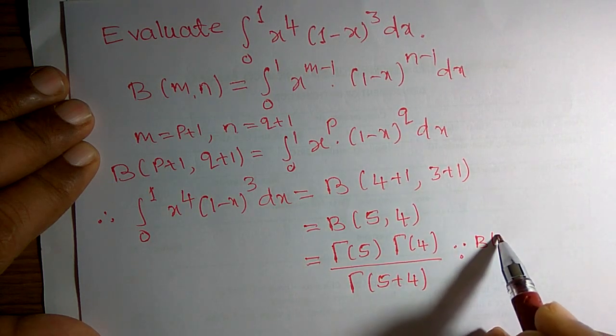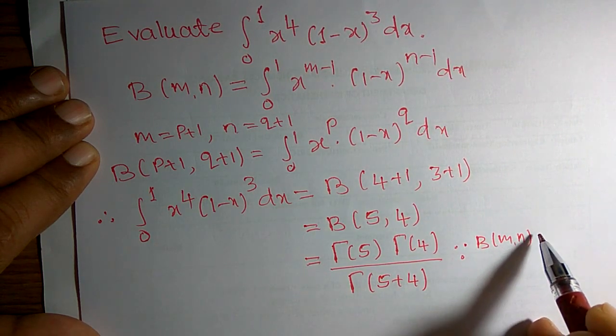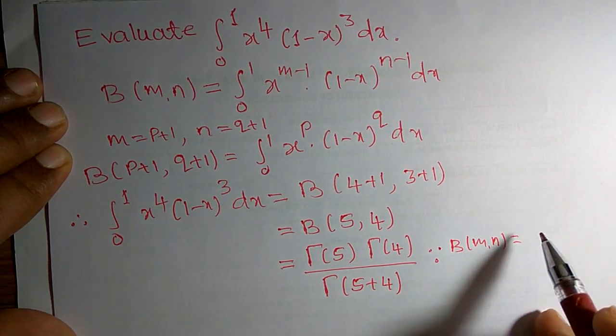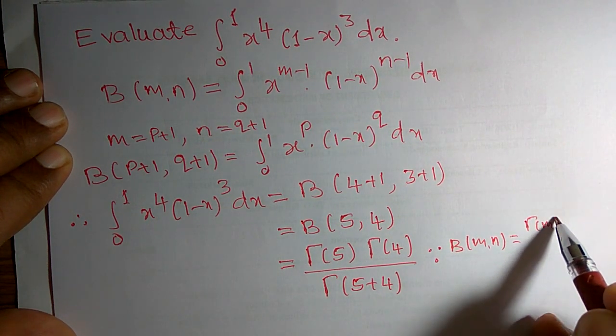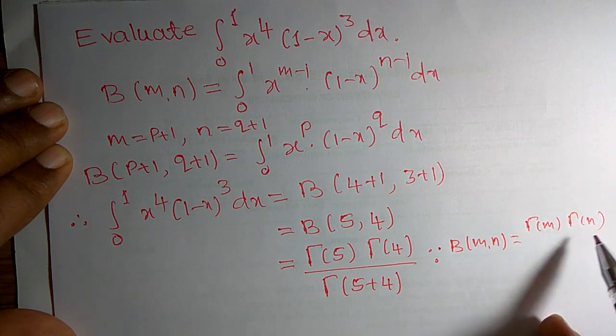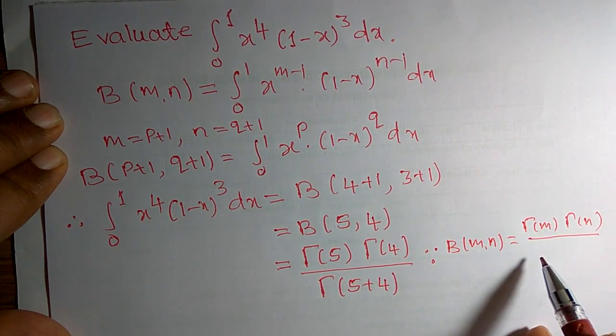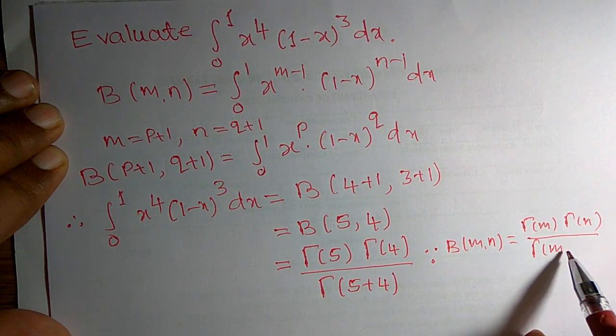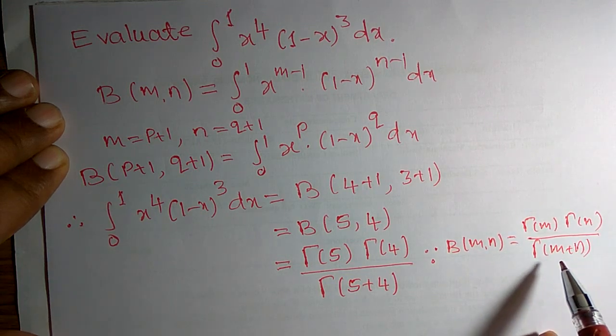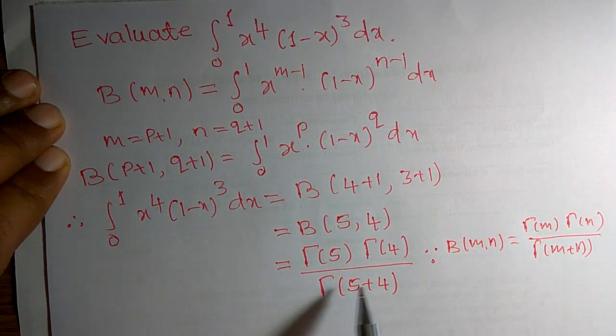Because we know that the relation between beta and gamma functions: beta of m, n can be written as gamma of m, gamma of n, whole divided by gamma of m plus n. So by using this relation, I can write it down.